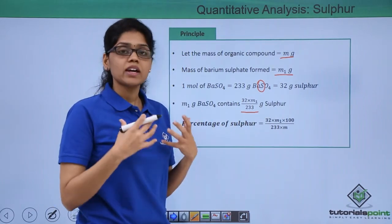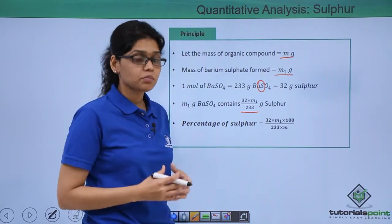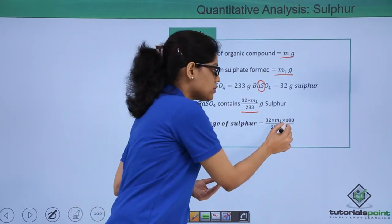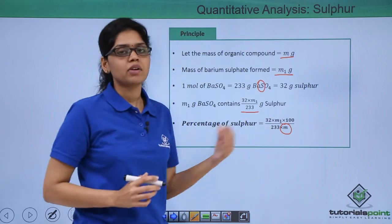Now the total mass or the amount of sulphur present in an organic compound would be simply this value divided by the mass of the organic compound and multiplied by 100.